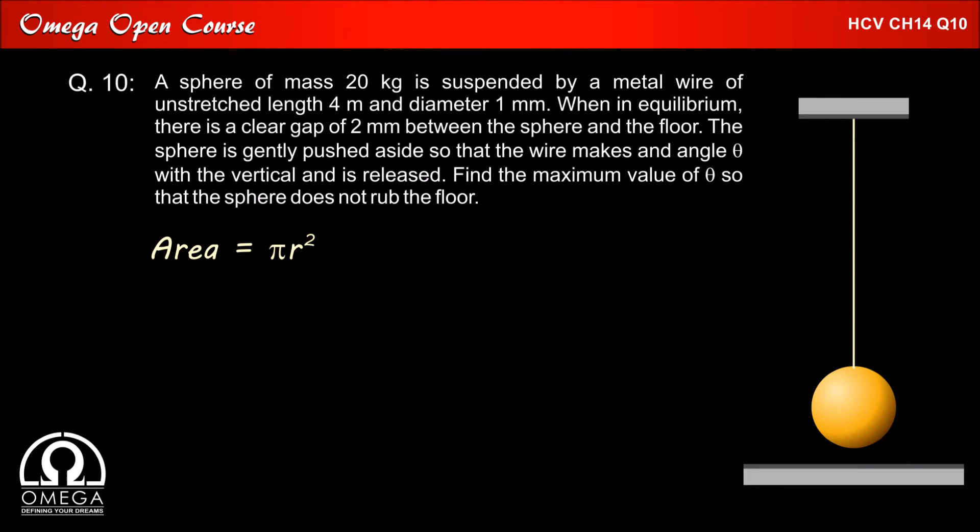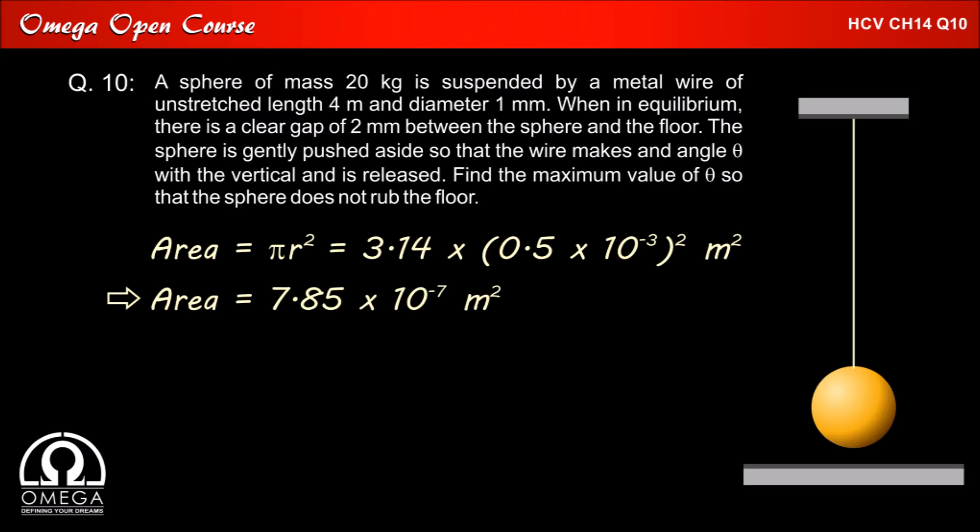The cross section area of wire is given by pi R square. Since the diameter of wire is 1 mm its radius will be 0.5 mm that is 0.5 x 10 to the power minus 3 meter. Thus the area becomes 3.14 x 0.5 x 10 to the power minus 3 whole square which on calculation comes out to be 7.85 x 10 to the power minus 7 meter square.